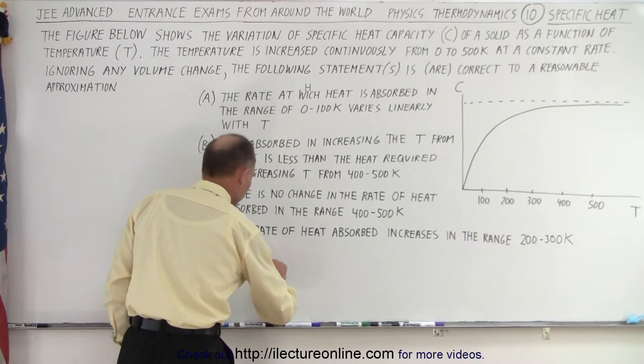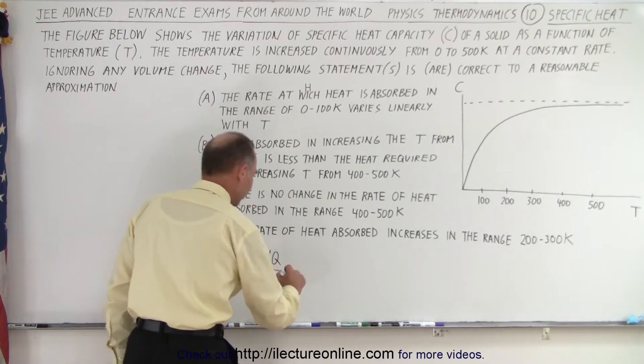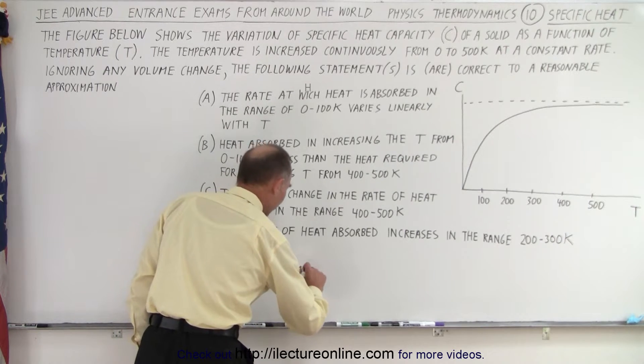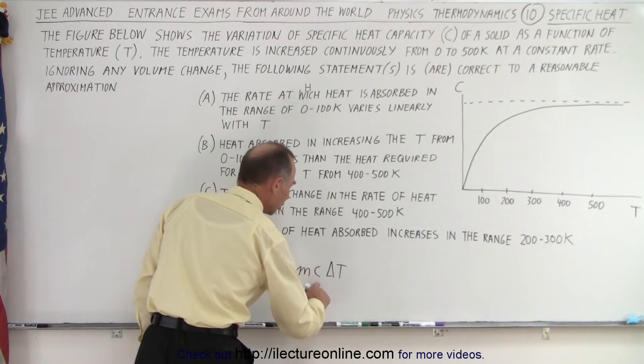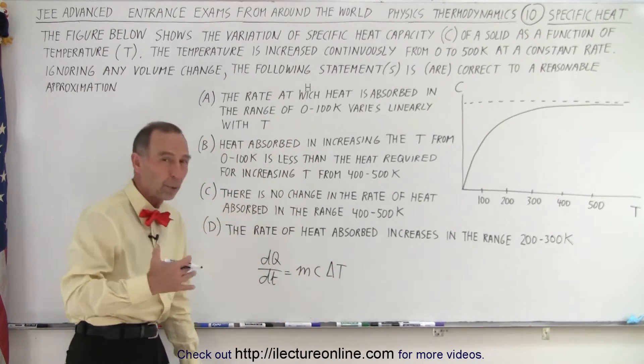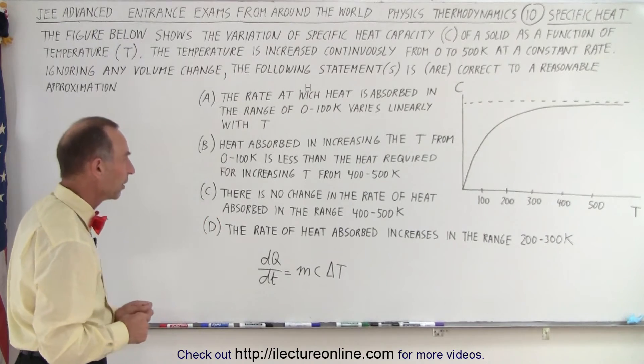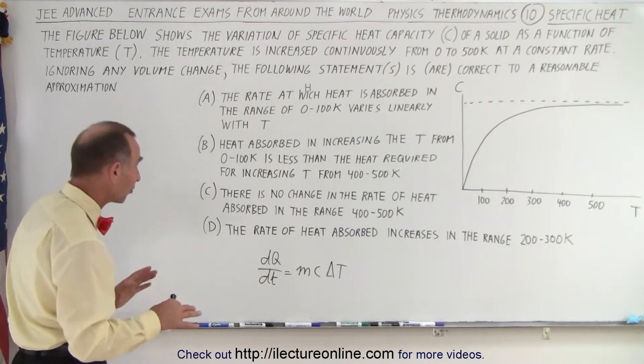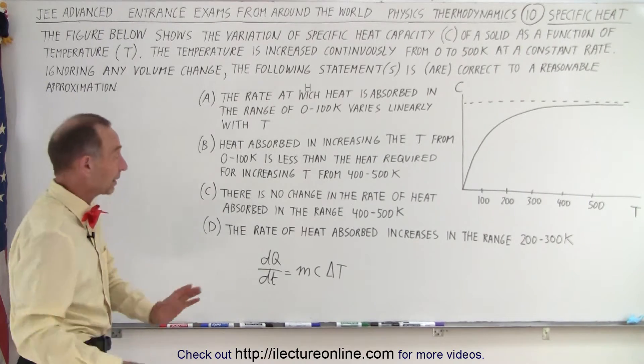Now, if you write the equation dq dt, the amount of heat put in or taken out of the system is going to be equal to the mass times the specific heat times the delta T. And we know that the specific heat is going to be proportional for this object to the specific heat capacity. So let's read the four answers and see if any one of them could be correct. Or maybe all of them are correct.